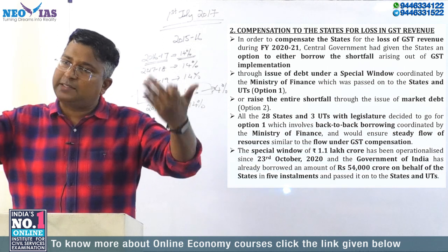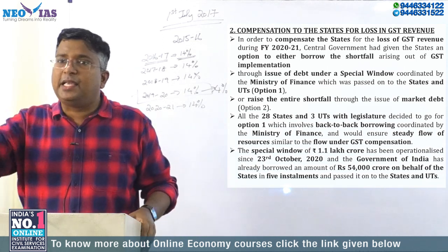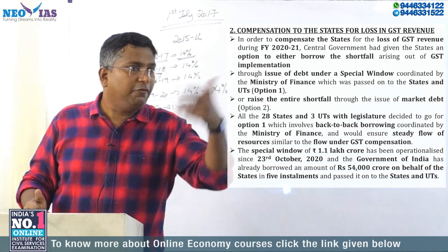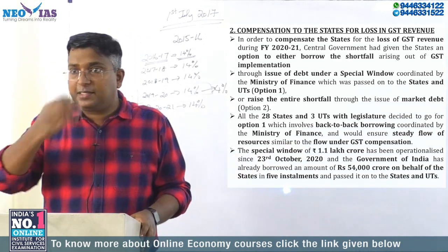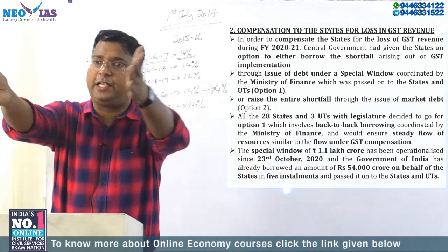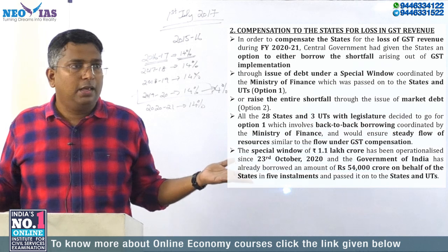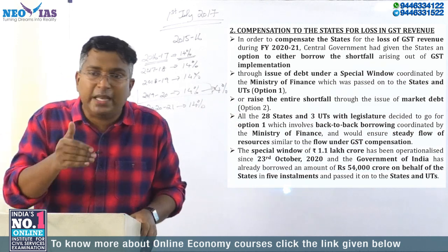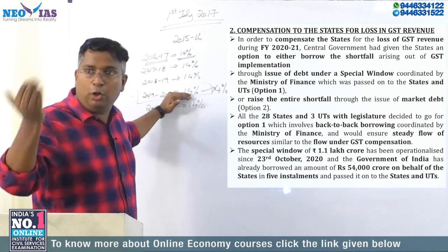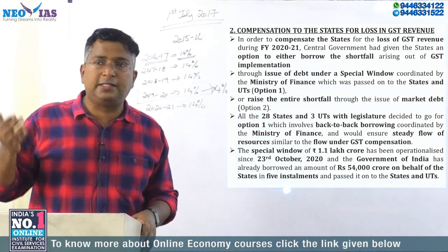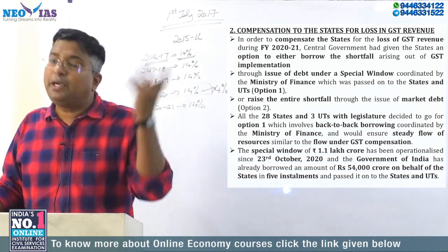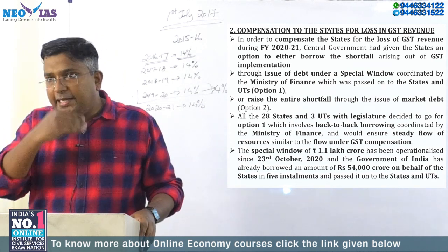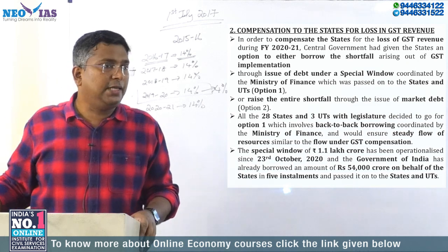Already, before the lockdown, the center was compensating the states. But not every state has equal proportions — some states' revenue is better, some have a shortage. Only those states with a shortfall get compensated. If a particular state is not affected by shifting to GST, they will not be compensated. Any state whose revenue growth is below 14% gets compensated. If a state has 18% revenue growth, there is no need to compensate them. But most states were affected.